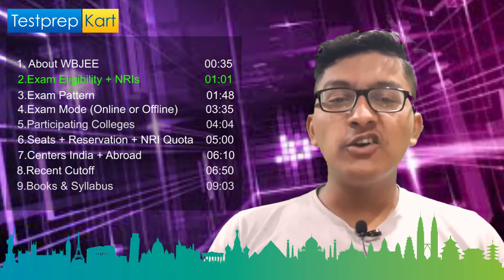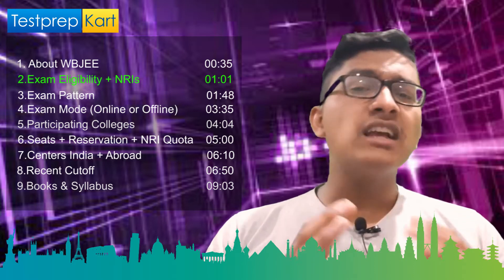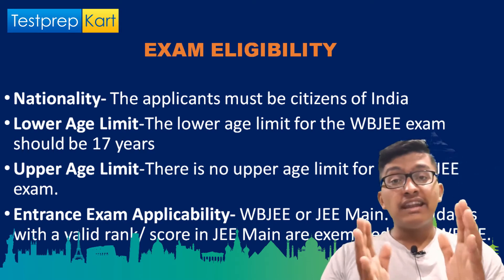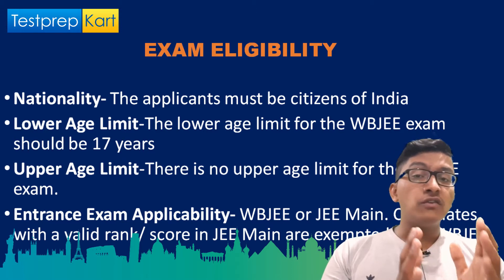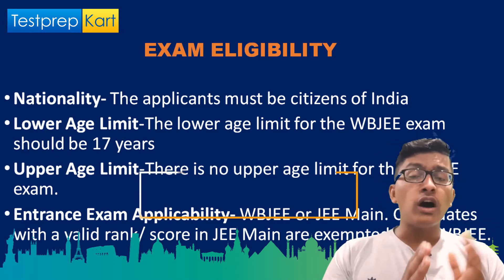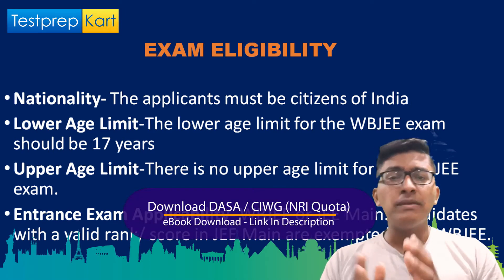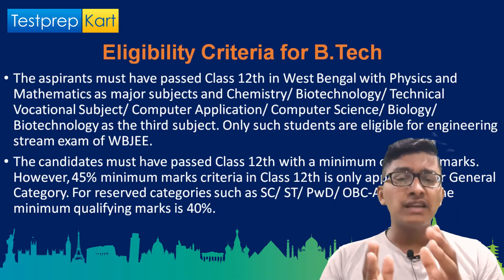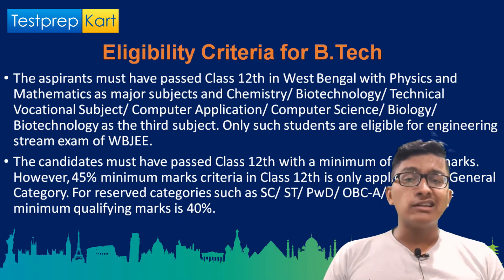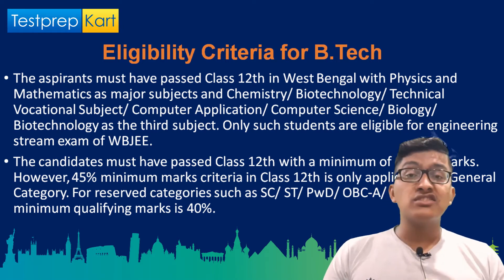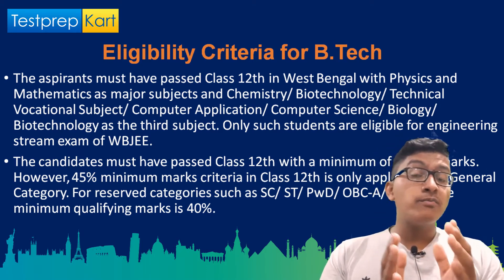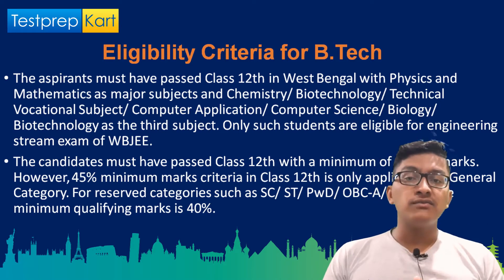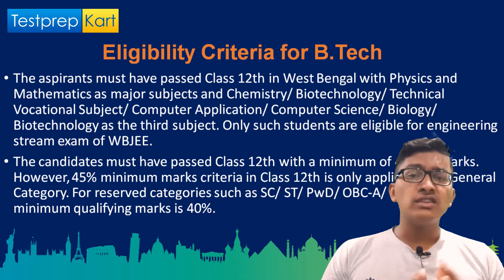The basic exam eligibility is that a candidate should be a citizen of India or can be an NRI student. The age limit is that a candidate should be a minimum of 17 years of age and there is no upper age limit. Specifically for B.Tech courses, Physics and Maths should be compulsory subjects in class 12th with a vocational subject from Chemistry, Biology, Computer Science, or Biotechnology. A candidate must have passed class 12th with a minimum of 45% for unreserved category and 40% for reserved category, and this is the same for NRI students also.